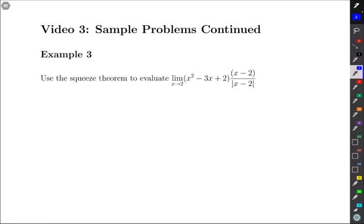So here's our first problem. Use the squeeze theorem to evaluate limit as x goes to 2 of x squared minus 3x plus 2 all times x minus 2 over absolute value of x minus 2.